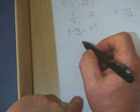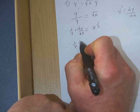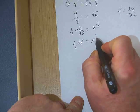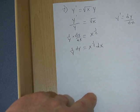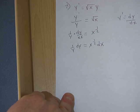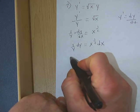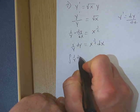Just like we did before, we're gonna multiply each side by dx and I get 1 over y dy equals x to the 1/2 dx. To solve this we need to integrate both sides.